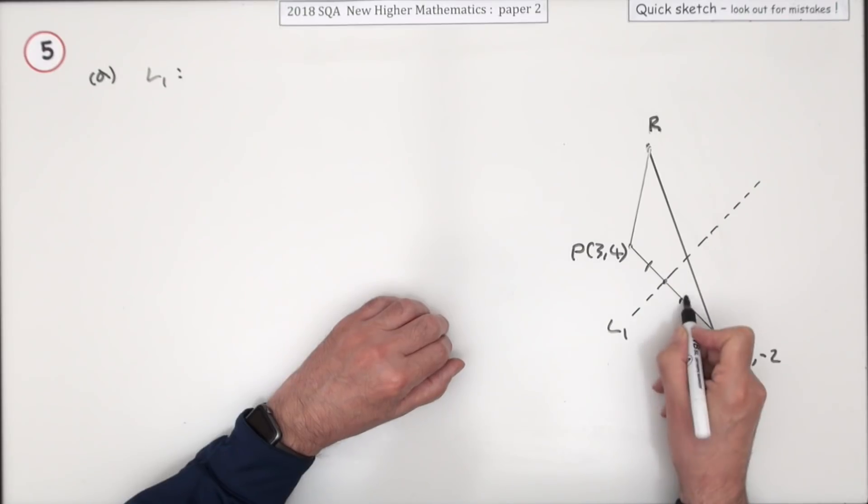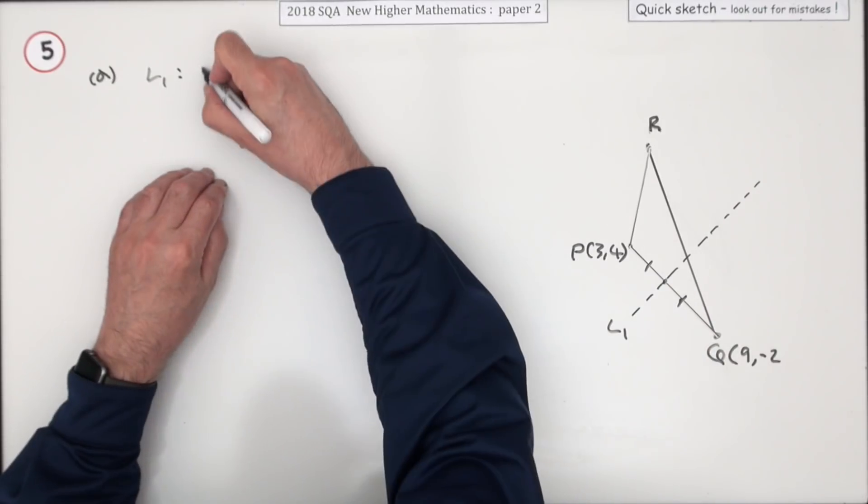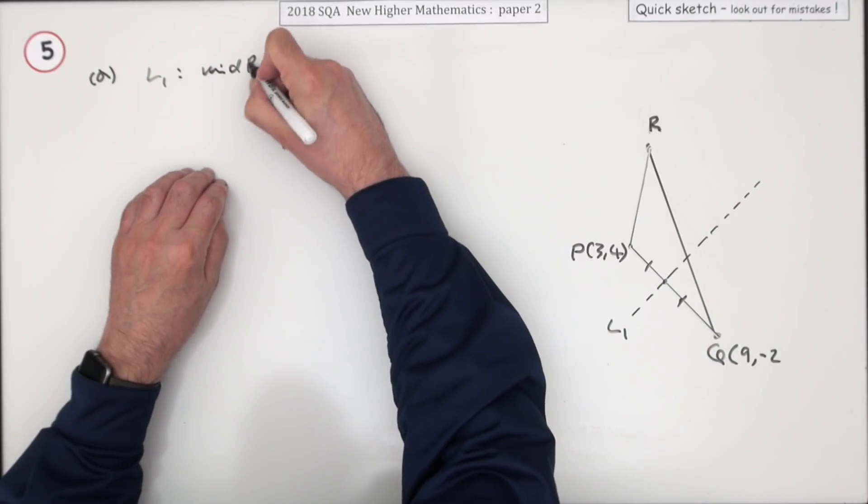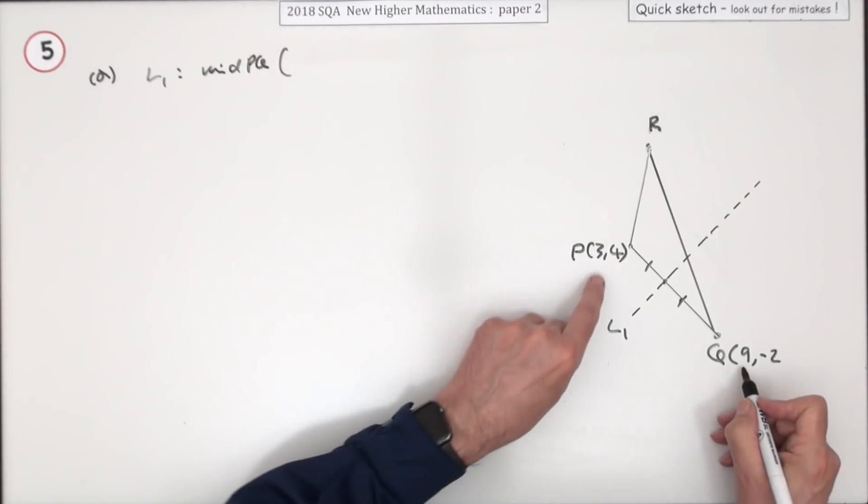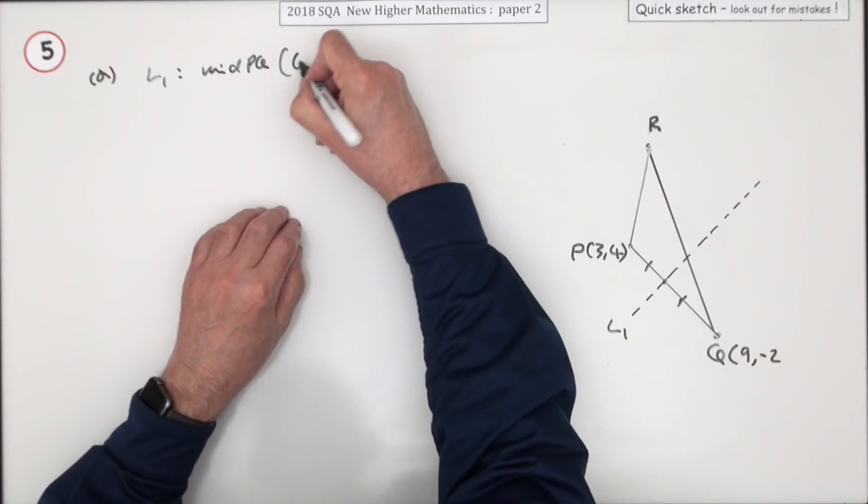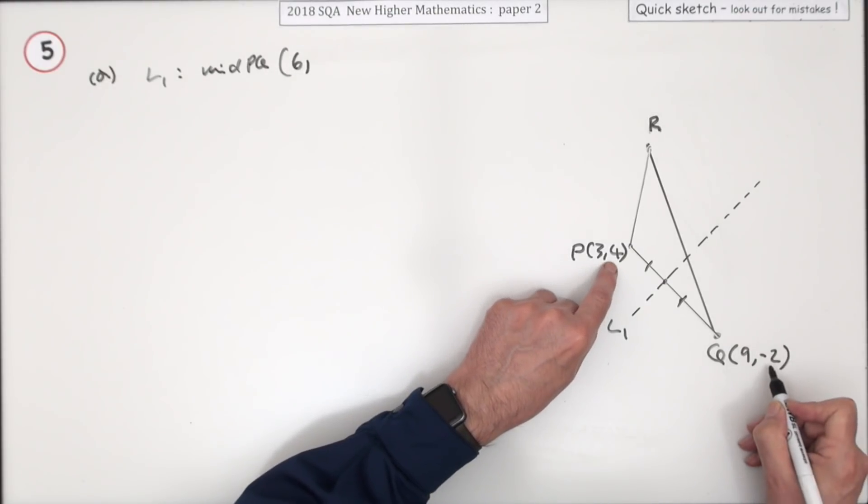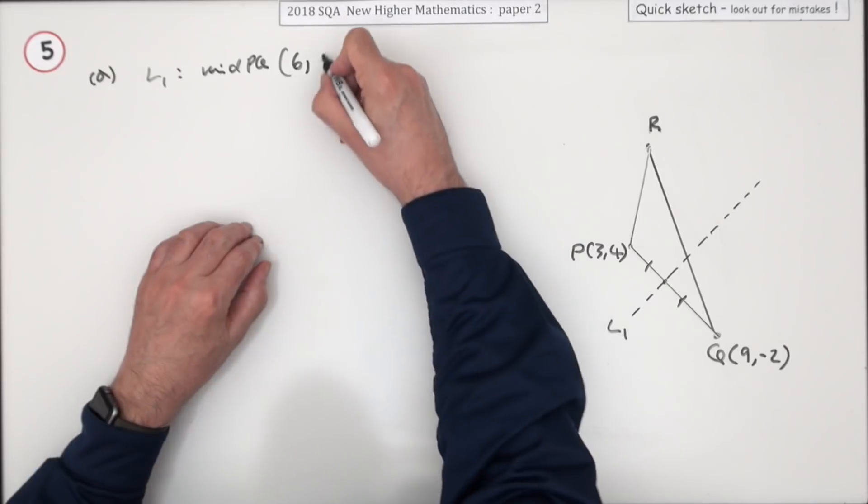Well it bisects so it'll be the midpoint of PQ. Midpoint of PQ would be halfway between the x coordinates, that adds up to 12, half that is 6. Halfway between the y coordinates, add that to 2, half that is 1.